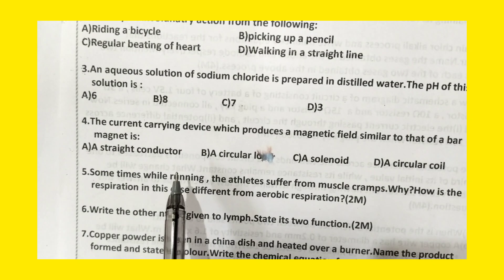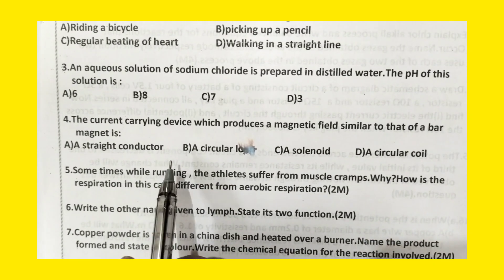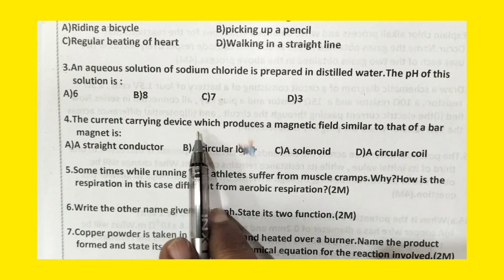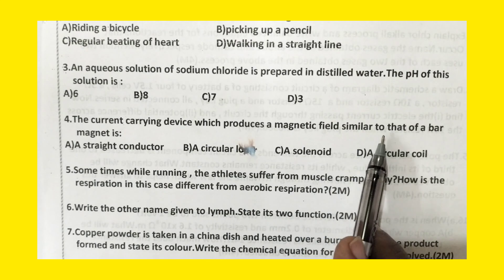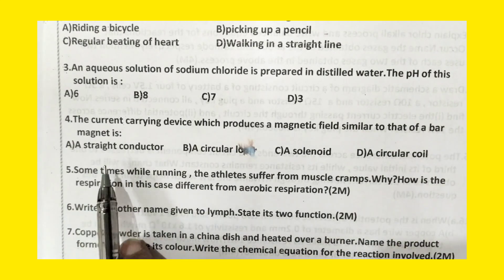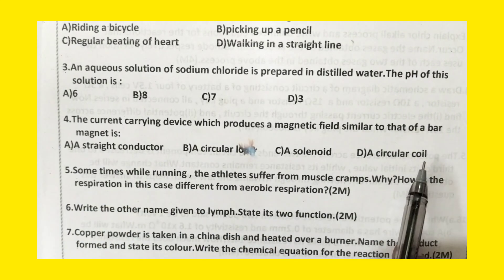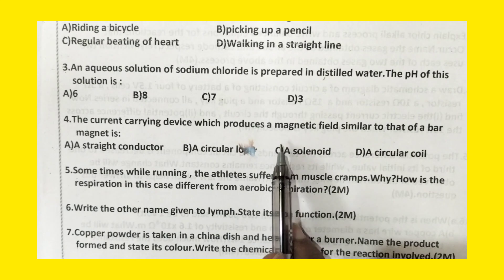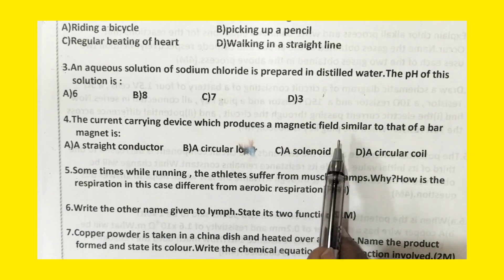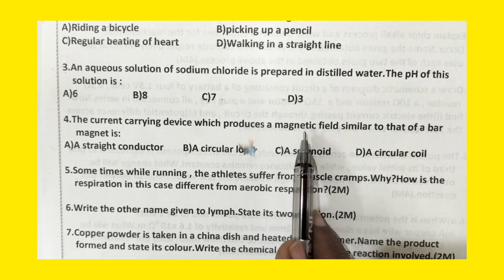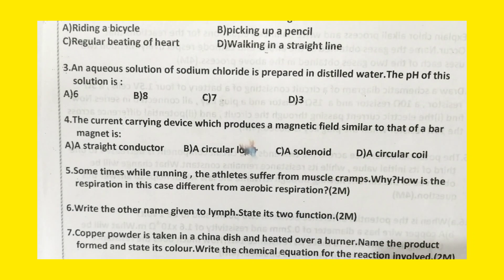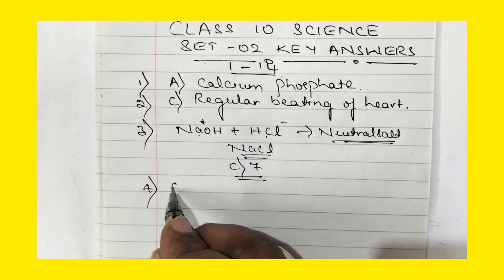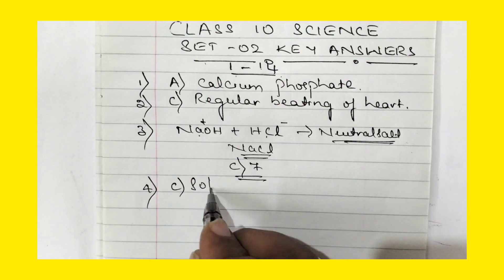Next, question number 4: the current-carrying device which produces a magnetic field similar to that of a bar magnet. Among these four options, the right option is a solenoid. A solenoid will produce a magnetic field which is similar to that of a bar magnet. So for the fourth question, the right option is option C, that is solenoid.